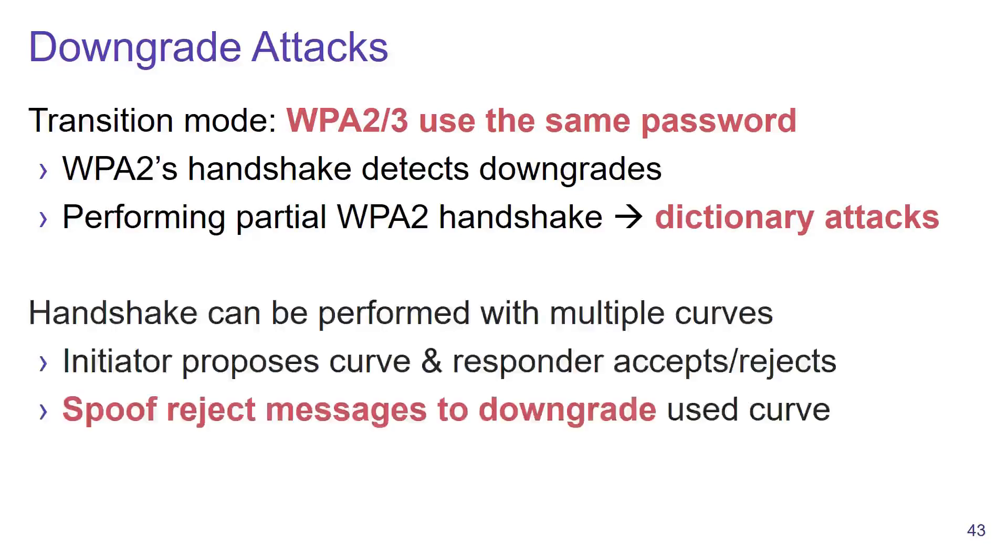Additionally, because Dragonfly can be executed using multiple elliptic curves, it is also possible to perform a downgrade attack where we trick the access point or client into using a weaker elliptic curve than they normally would.